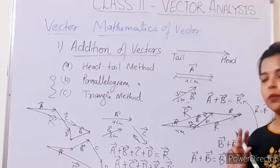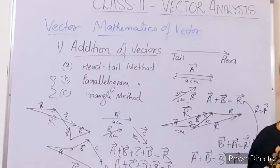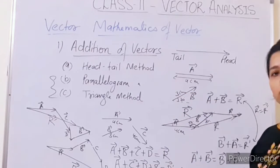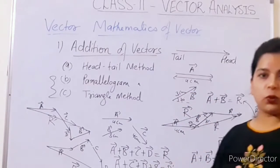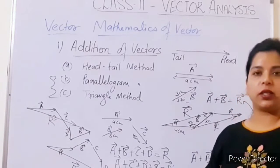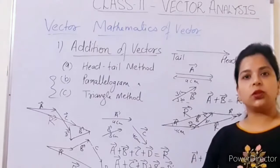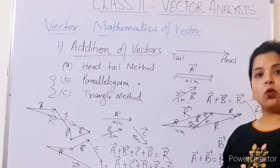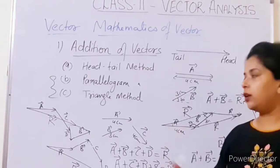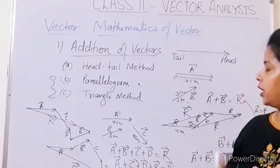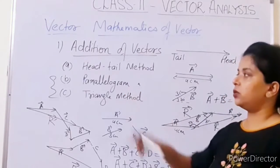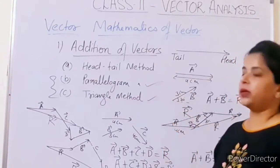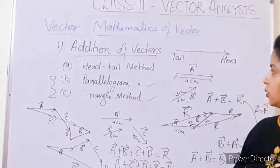The magnitude of the resultant is found by scale measurement and the direction by a protractor. However, the head-tail and polygon methods are not commonly used in practice because scaling and measuring with a protractor is time-consuming. We need a quicker method to find magnitude and direction, so we go with the triangle and parallelogram methods.